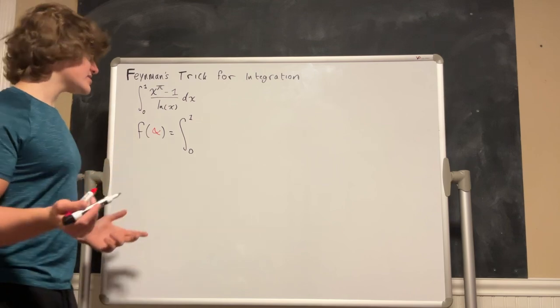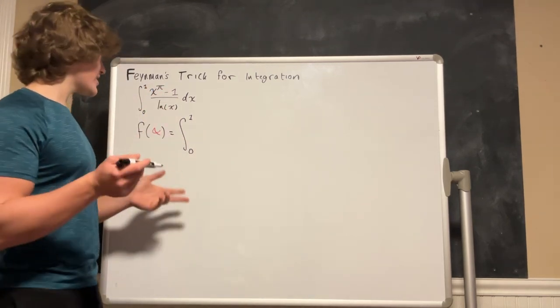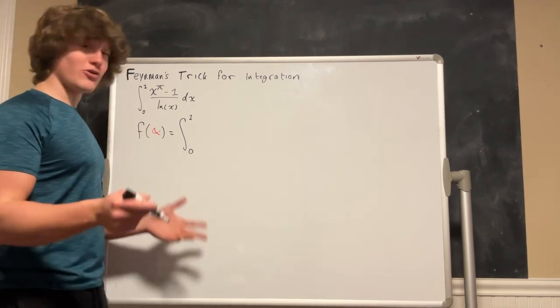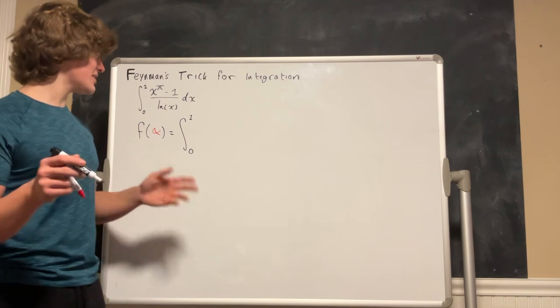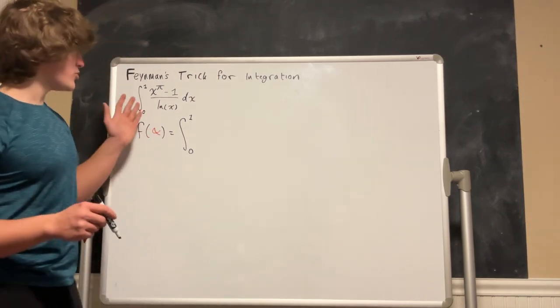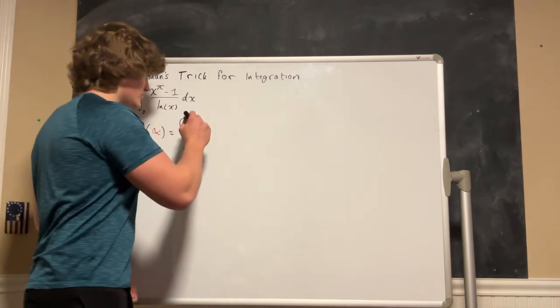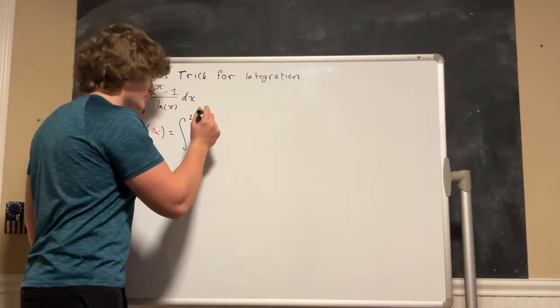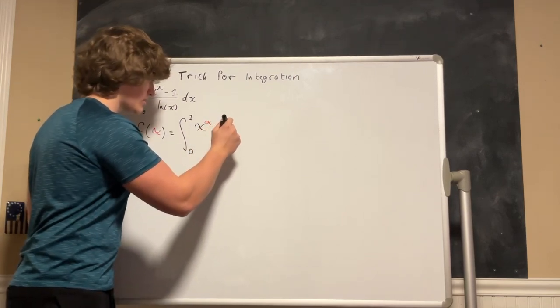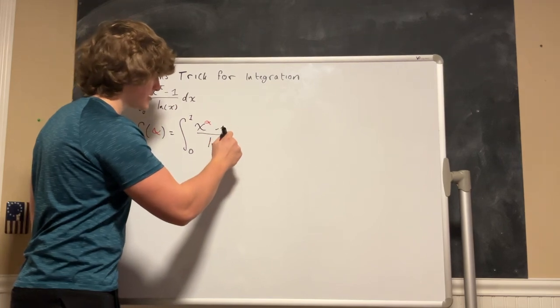So in this case I am going to choose this π right here which will make a lot of sense later in this video, and that's something that you will be able to see over time after doing these types of integrals a lot where you will be able to recognize when and where to apply this method. So this becomes the integral of x to the alpha minus 1 over ln of x dx.